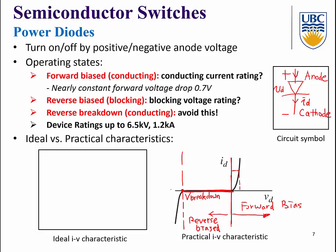If we apply a larger reverse voltage exceeding the breakdown voltage, the diode will enter reverse breakdown and conduct a negative current. For power electronic converters, we do not want reverse breakdown — we try to avoid it. Zener diodes use this reverse breakdown mode, but in power electronics we avoid it. The power diode device rating can be up to 6 kilovolts and 1.2 kiloamps.